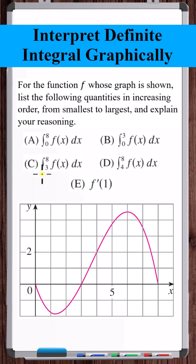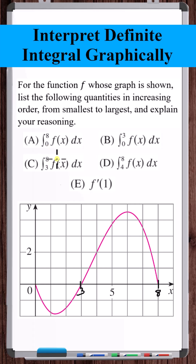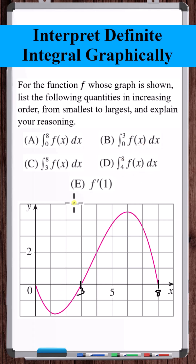The definite integral from 8 to 3 — so this is 3, this is 8 — is going to be positive. The definite integral from 8 to 0 will also be positive, because this area is bigger than this area. From 8 to 4 will also be positive. The definite integral from 3 to 0 will be negative.